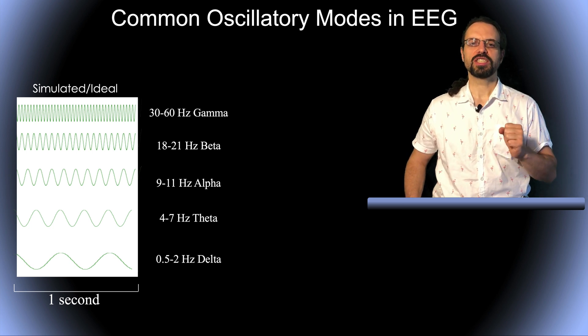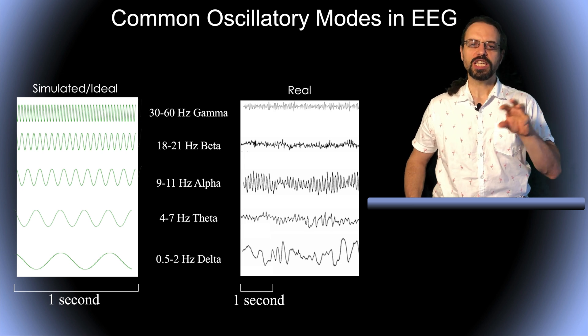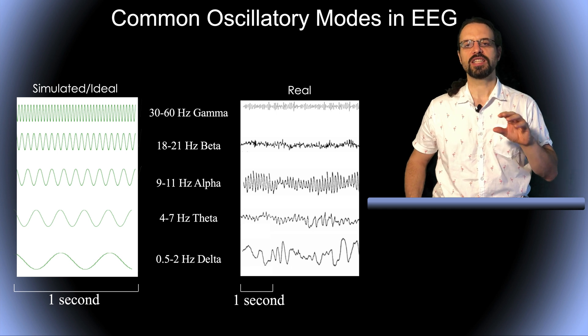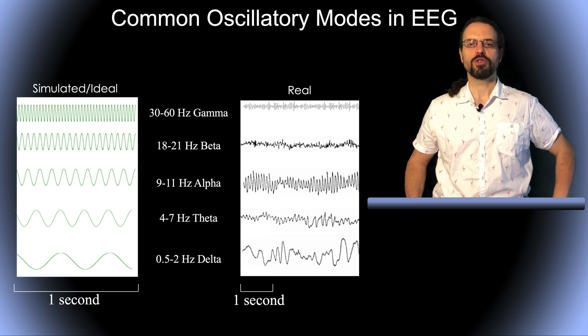And when you look at the actual EEG signal, it would look more like this. And as you can see, for each frequency of interest, there is actually a mixture of different signals at different frequencies. So in real EEG, a given frequency is rarely seen in its pure form.